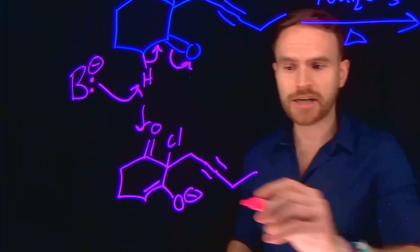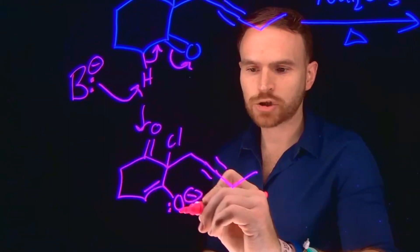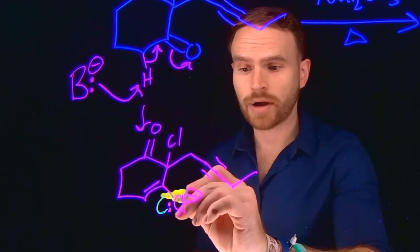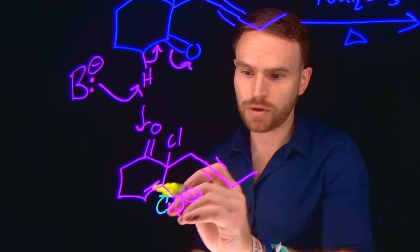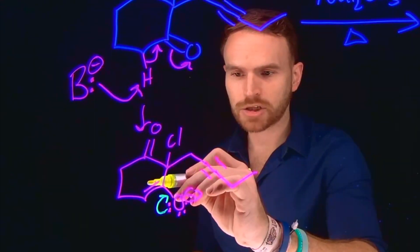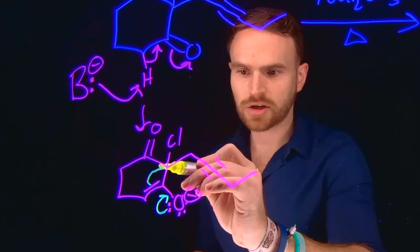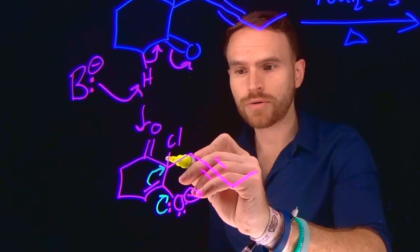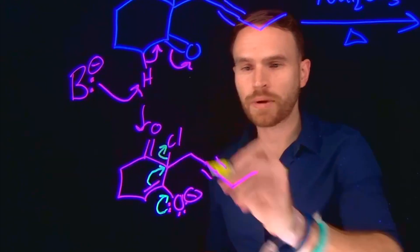And then in typical enolate fashion, what will happen is these electrons that are now located on this oxygen can come back down, allowing us to do chemistry with this carbon-carbon double bond. So at this stage, what will happen is these pi electrons will move and attack this carbon, and then do similar to a substitution reaction, where this chloride, being a good leaving group, can be kicked off.